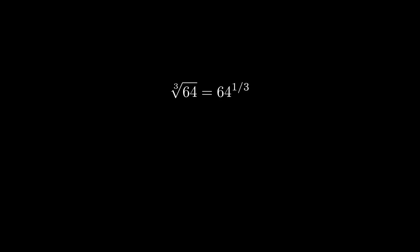For example, the cubed root of 64 just means 64 to the 1 third, the square root of 64 just means 64 to the 1 half, the first root of 64 is 64 to the 1 over 1, and so the zeroth root of 64 should be 64 to the 1 over 0. And herein lies another problem with the zeroth root.